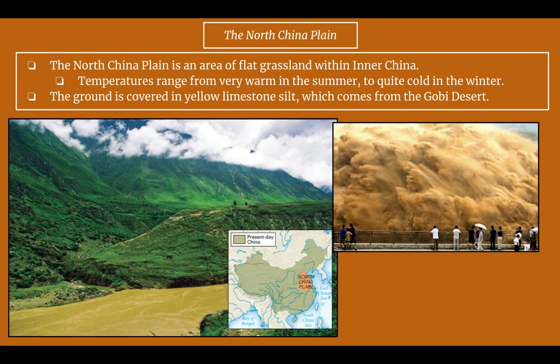The North China plain is an area of flat grassland within inner China. Temperatures range from very warm in the summer to quite cold in the winter, but it's a little more moderate than the other areas. The ground of the North China plain is covered in yellow limestone silt, which comes from the Gobi Desert. Here is the Huanghe — you can see its color comes from the silt. Here's a picture of the North China plain, located south of the northeastern plain.